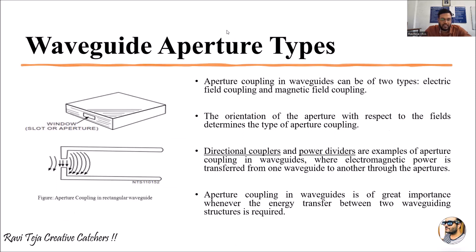In the diagram shown here, the waveguides have small cuts which we consider as window slots or apertures, through which the passage of energy of an electromagnetic wave will occur from one waveguide to another waveguide.